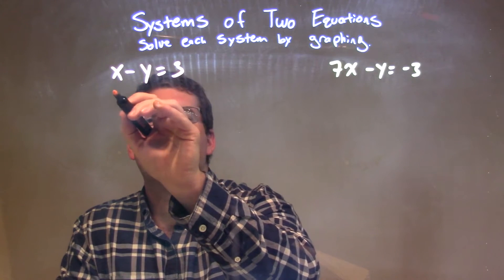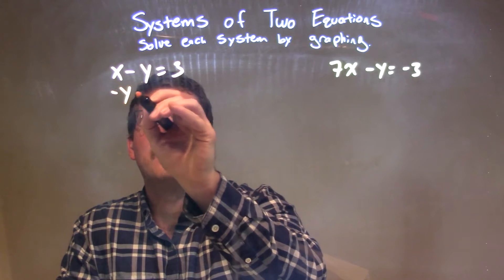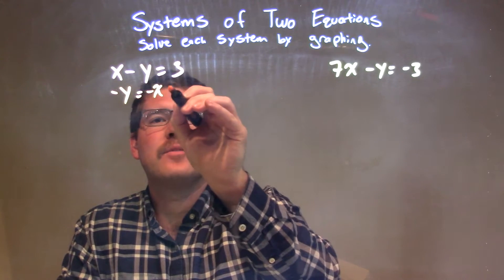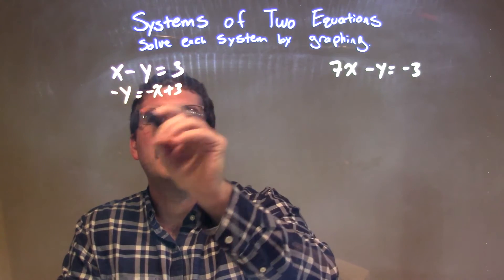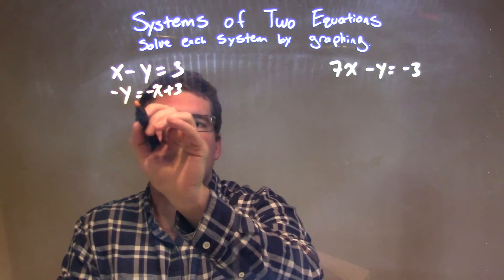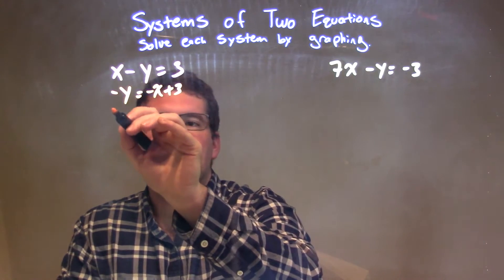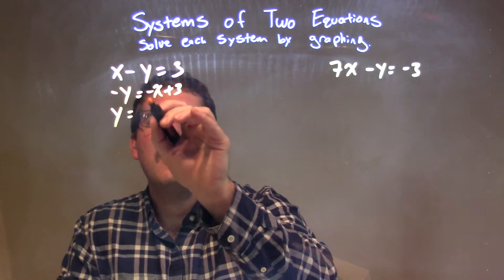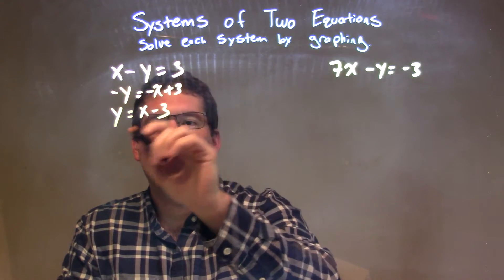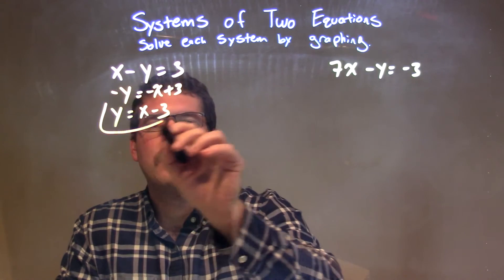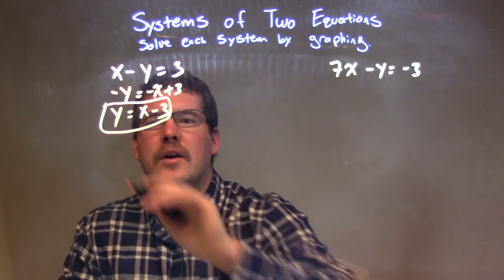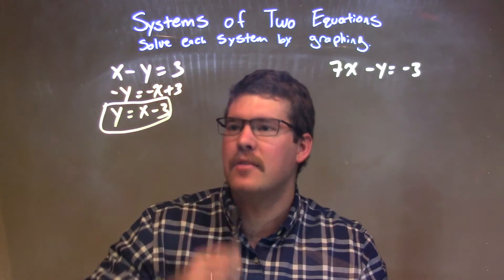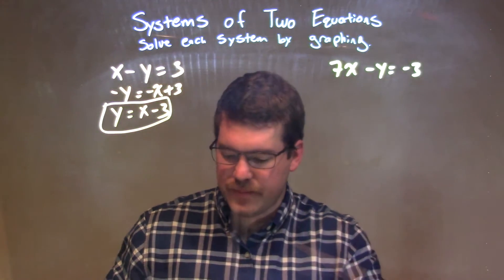Subtract x from both sides, leaving negative y equals negative x plus 3, then divide both sides by negative 1 so y is positive on the left, and it becomes positive x minus 3 on the right. So our first equation can be rewritten as y equals x minus 3.